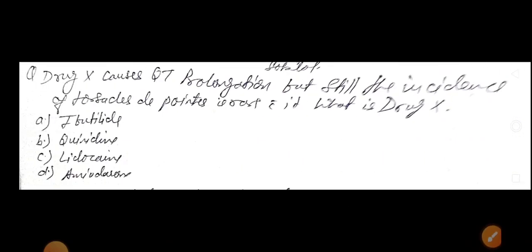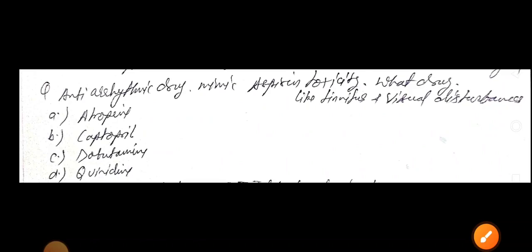Now, drug X causes QT prolongation. But still, the incidence of torsade de pointes are rare. What is drug X? Ibutilide, quinidine, lidocaine, amiodarone. So guys, drug causes QT prolongation, but incidence of torsade de pointes is very less. Answer is amiodarone. So these are very important, gold standard.